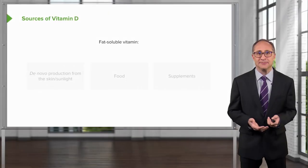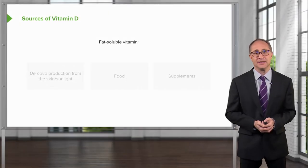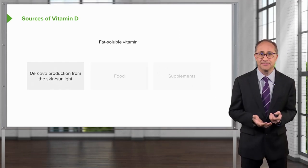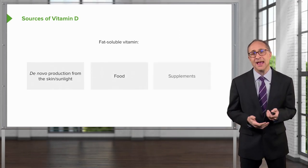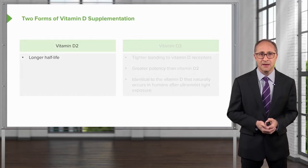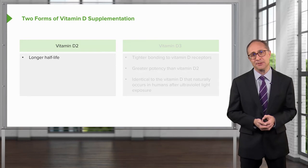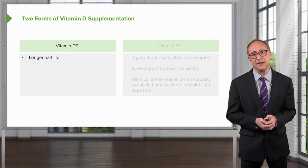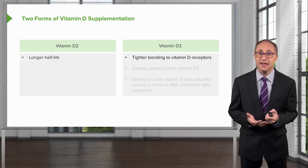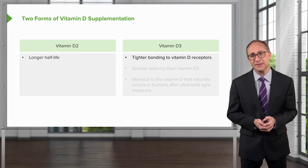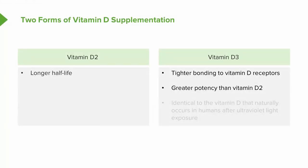The sources of vitamin D, which is a fat-soluble vitamin, include de novo production in the skin from sunlight, food that we eat, and vitamin supplements. There are two forms of vitamin D supplementation: vitamin D2, also known as ergocalciferol, which has a longer half-life; and vitamin D3, or cholecalciferol, which has tighter bonding to vitamin D receptors and greater potency than vitamin D2.